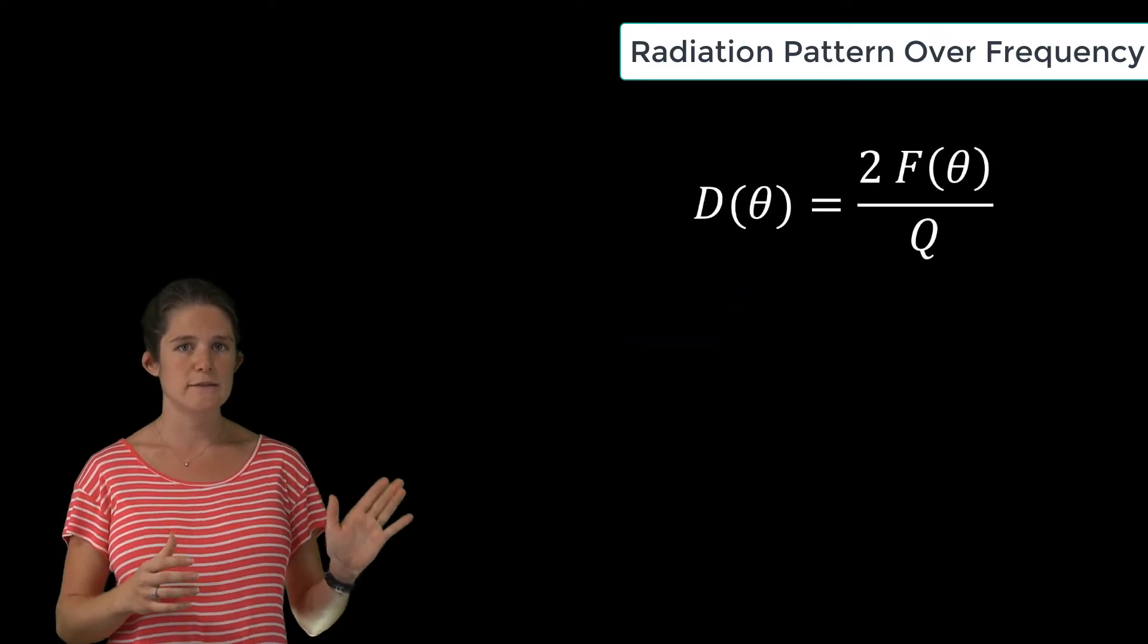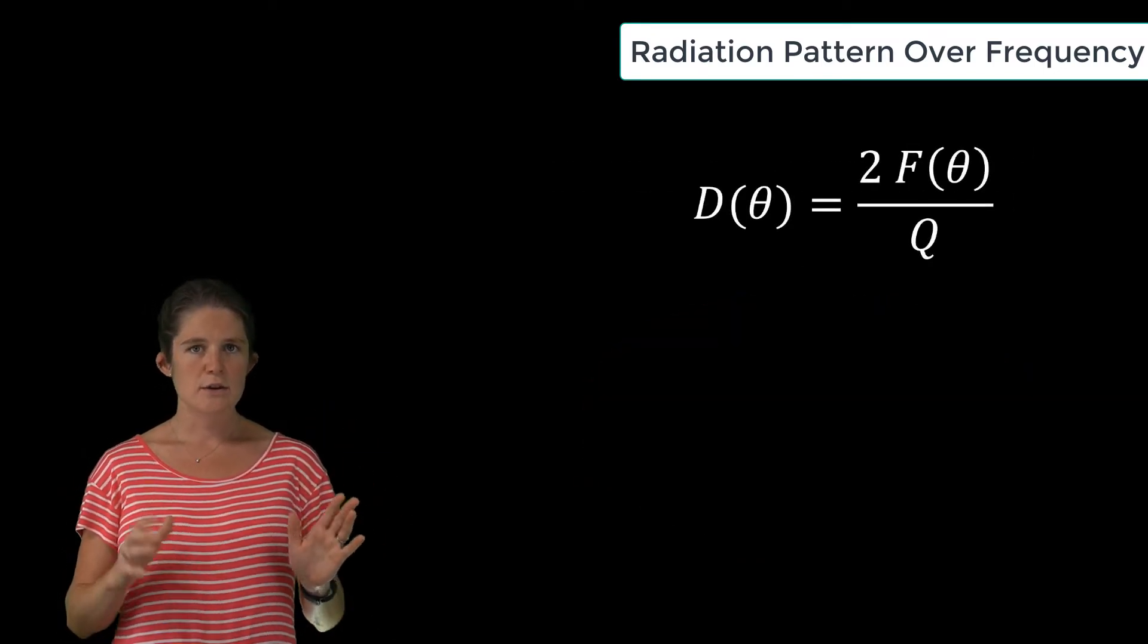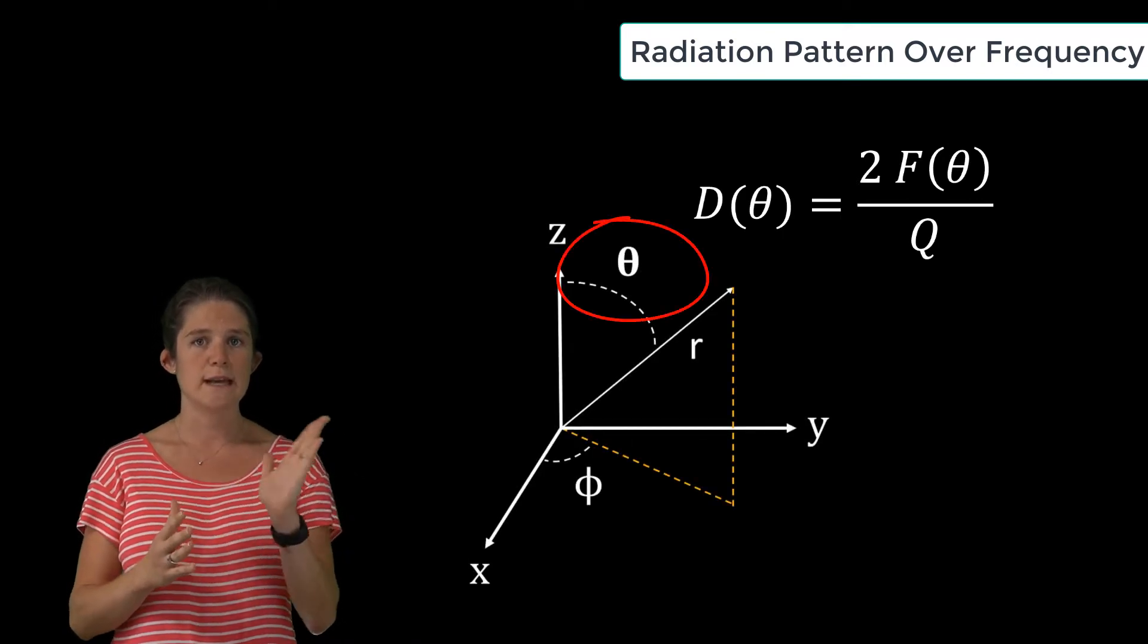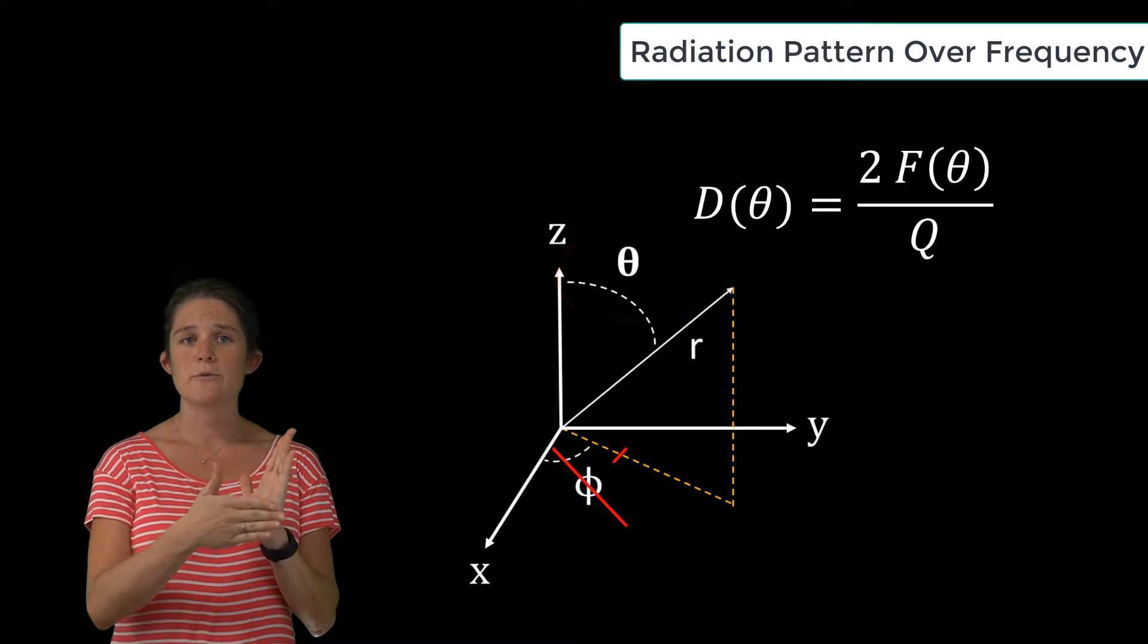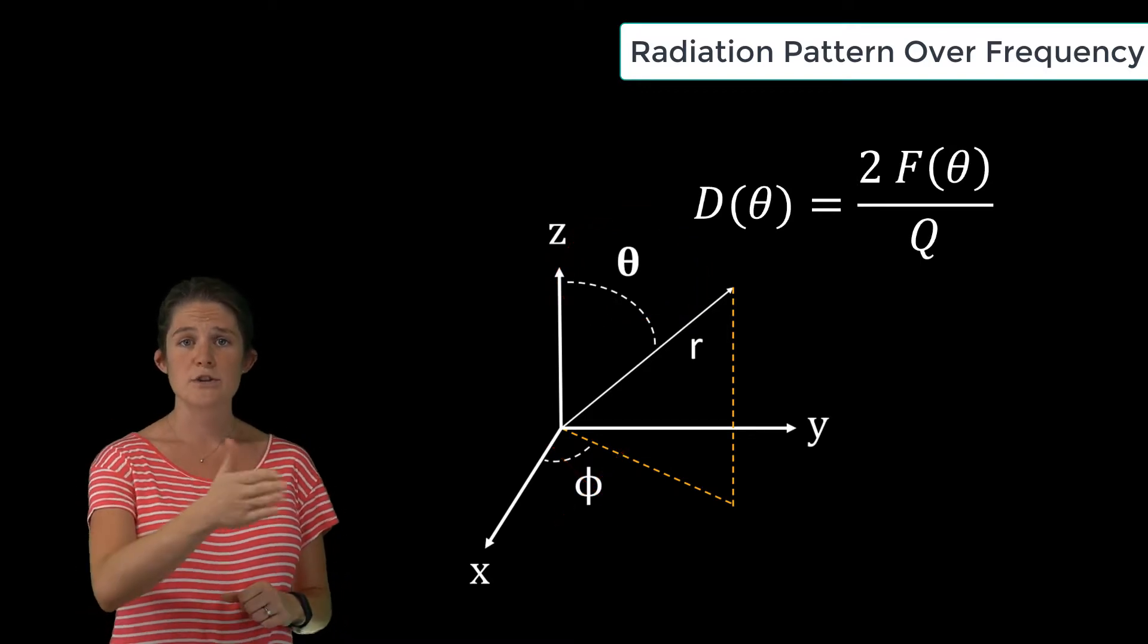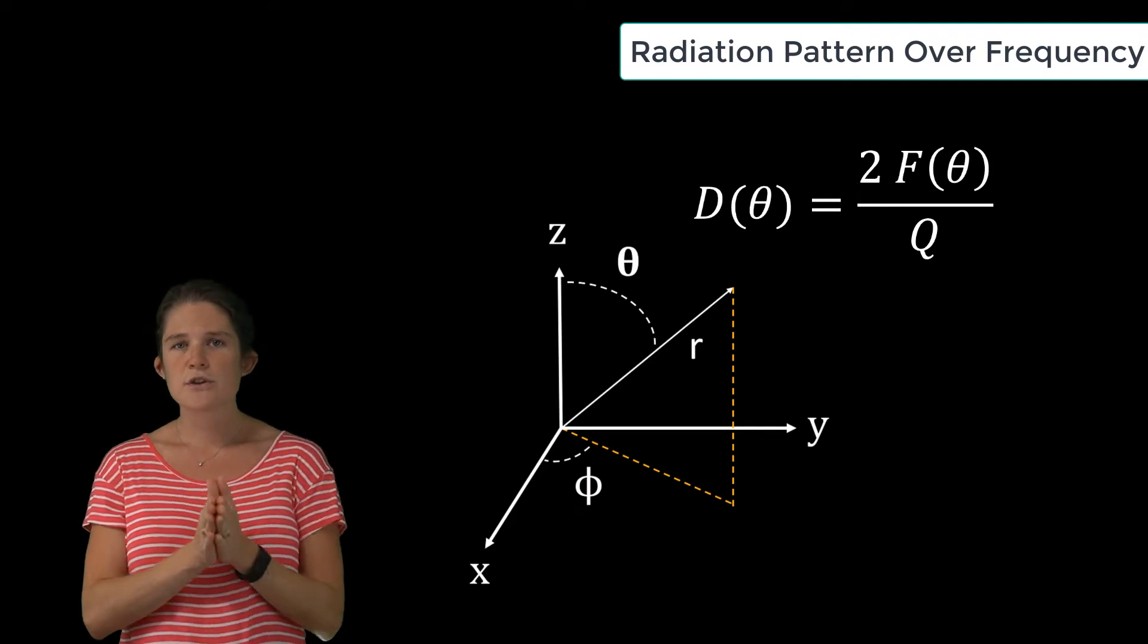Here is the equation for the directivity of a dipole antenna. Note that the directivity depends on theta, the angle from the z-axis, but not on Phi. That's because the directivity of a dipole is symmetric about the z-axis.